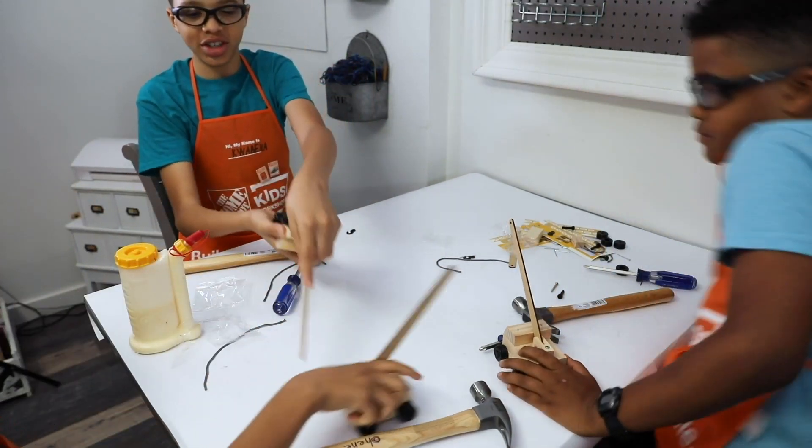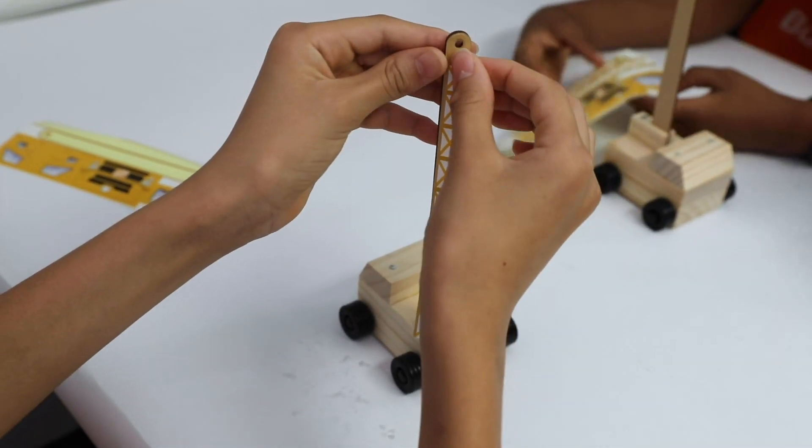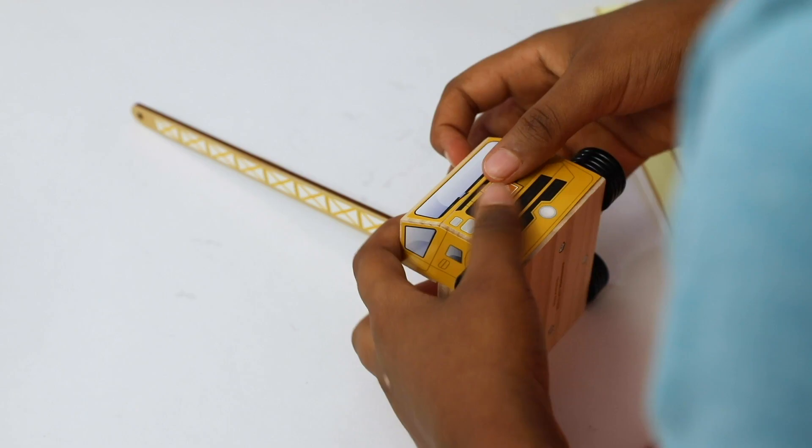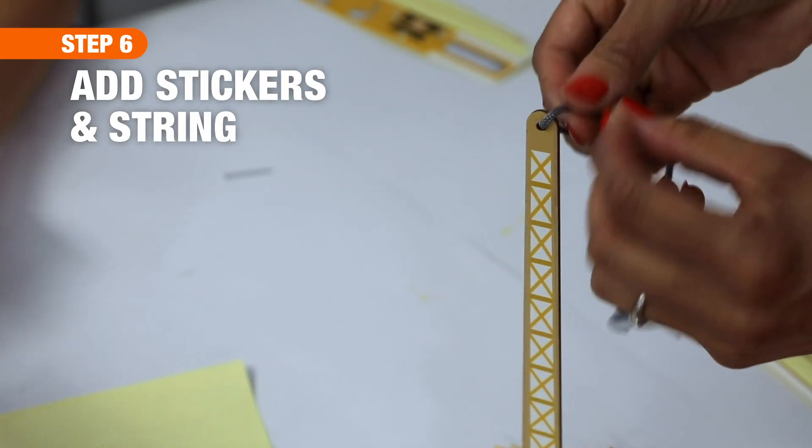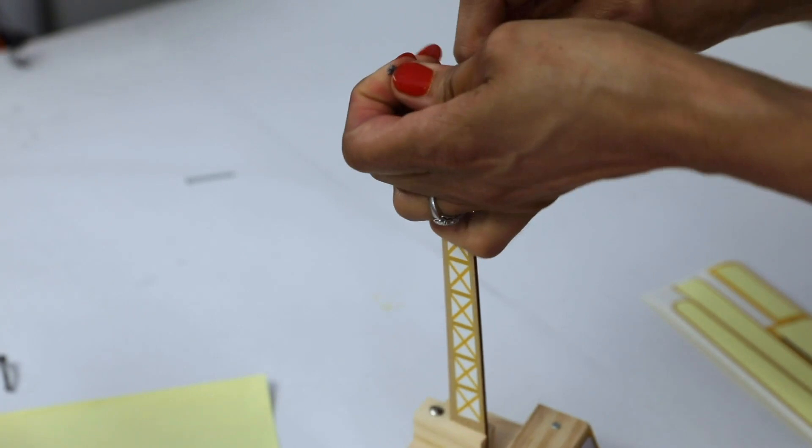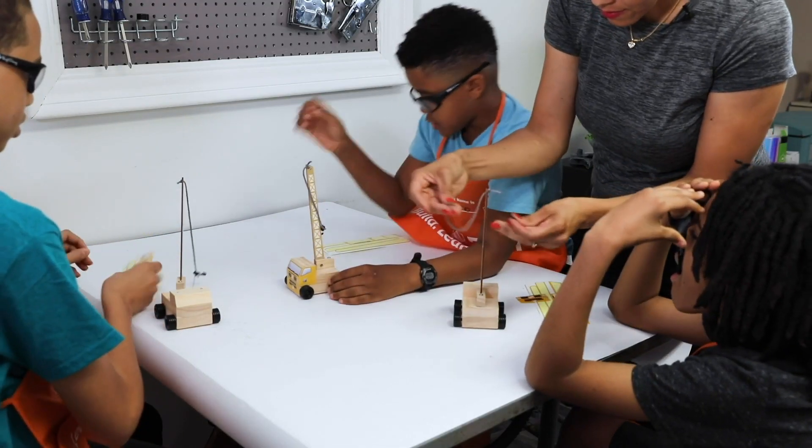And the kids were already battling each other before we got to the final step, step six, which is adding the stickers and the string. So add the stickers and then push one end of the string through the hole in the arm and then tie a knot, and then push the other end of the string into the hole in the hook and tie that knot as well.